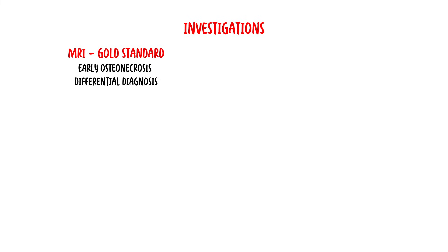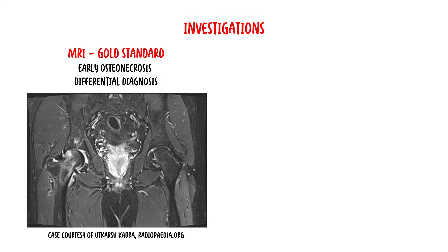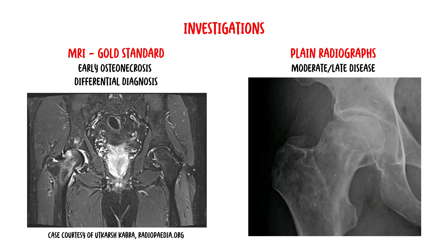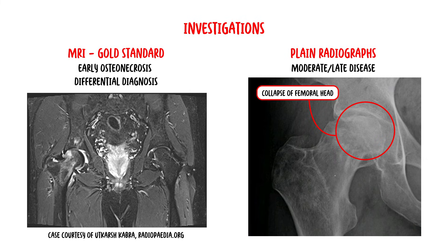Investigations for osteonecrosis include MRI, which is the gold standard in detecting early osteonecrosis and is able to differentiate from other diagnoses such as bone bruising. Here is an MRI showing obvious right osteonecrosis of the femoral head with some collapse, and this patient also has left-sided osteonecrosis — so bilateral. Diagnosis can also be made with plain radiographs, but this is typically in moderate to late disease. Here is an x-ray of a right femoral head showing collapse of the femoral head — at least stage 3, and most likely stage 4, as the acetabulum is already roughened.